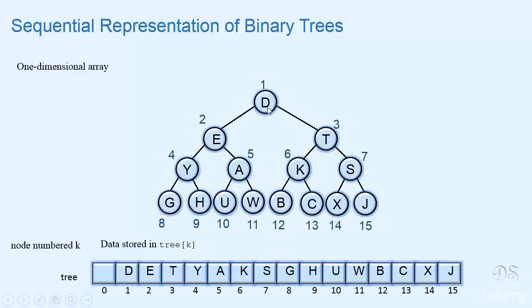So we can see that d is stored at index 1, e at index 2, t at index 3, and so on. This k is at index 6, and this j is at index 15.